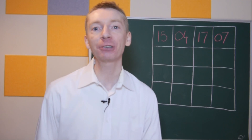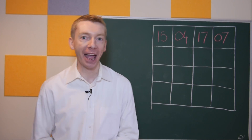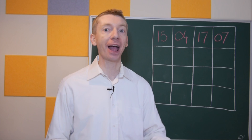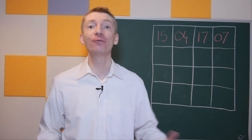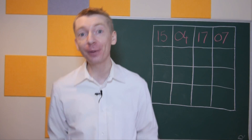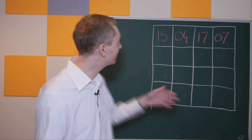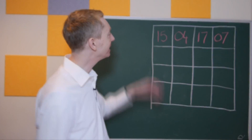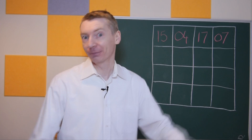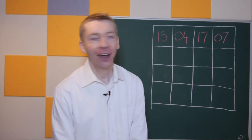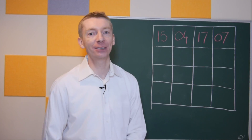Hey everyone, today I want to show you how to make a birthday magic square. That's a special kind of magic square that uses someone's birth date in the top row. It could be your birth date or someone else that you know. I've started an example here using Leonard Euler's birth date, which was the 15th of April 1707.